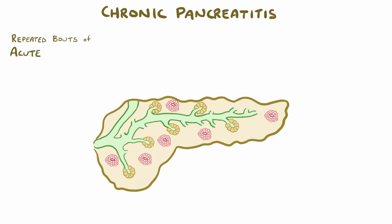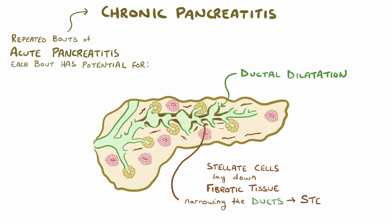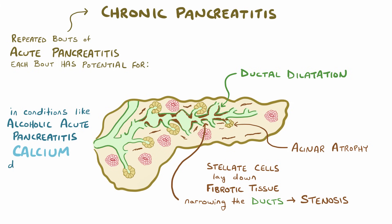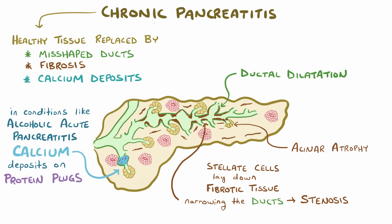Repeated bouts of acute pancreatitis can progress to chronic pancreatitis. With each bout, there's potential for ductal dilatation and damage to the pancreatic tissue. As part of the subsequent healing process, pancreatic stellate cells lay down fibrotic tissue, which causes narrowing or stenosis of the ducts, as well as acinar cell atrophy. In addition, in certain conditions like alcoholic acute pancreatitis, calcium deposits of various sizes can accumulate on the plugs that form in the ducts. This gradual process of healthy pancreatic tissue getting replaced by misshapen ducts, fibrosis, and calcium deposits is chronic pancreatitis.